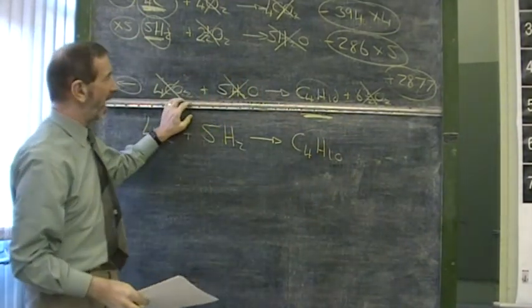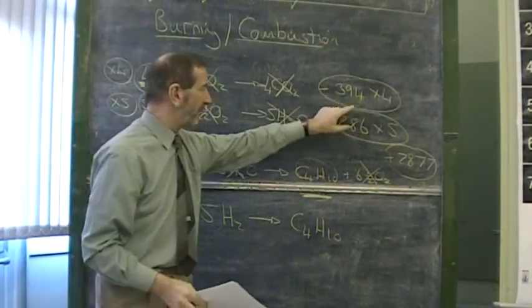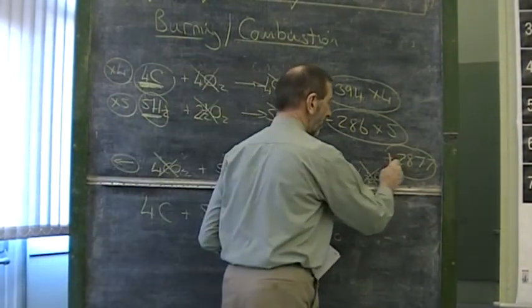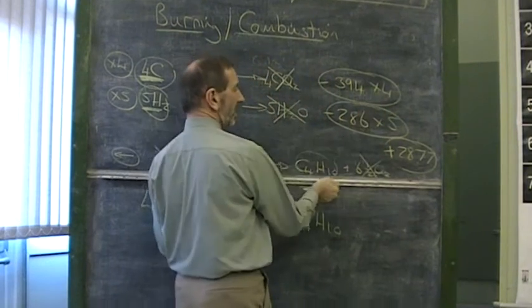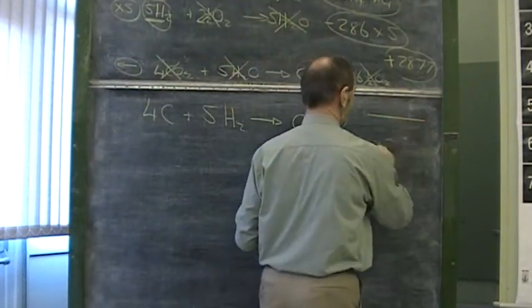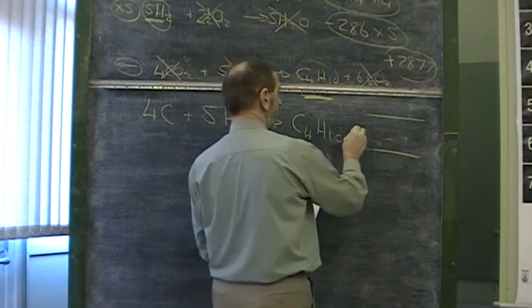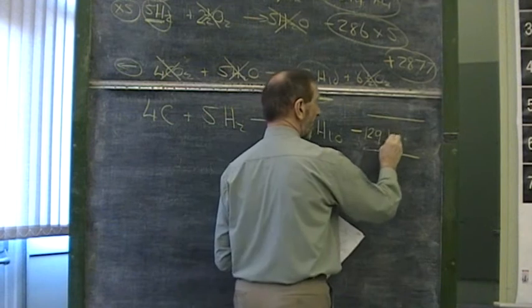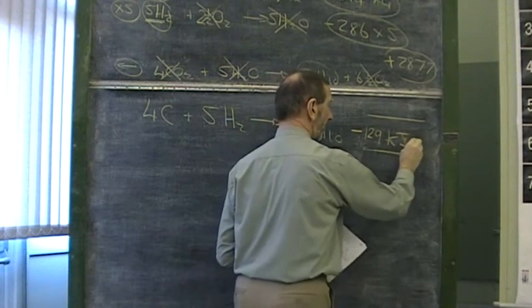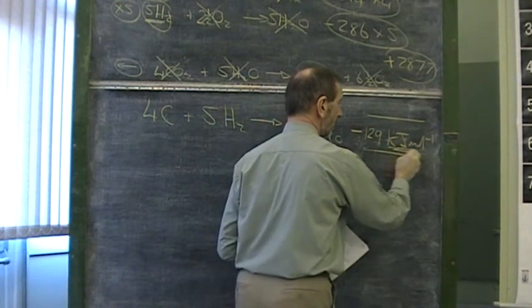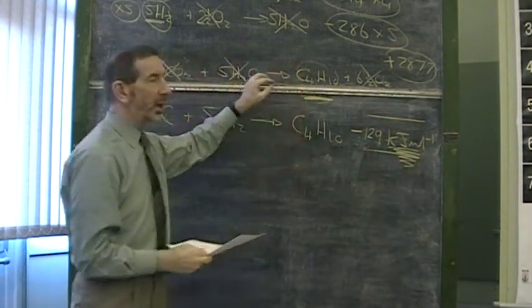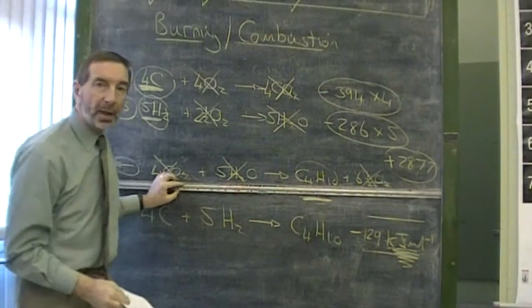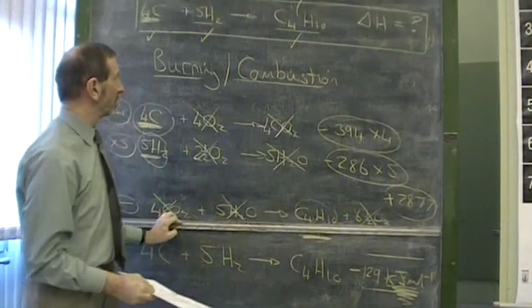But it's more important that I add up the numbers correctly. If I multiply this by 4, this by 5, and make sure this is a positive value, and add these numbers together carefully, it's silly to lose marks at this stage. I get the final answer which is negative 129. Then I must put the units in. Kilojoules per mole. You must end up with the units. You can leave the units out in the course of the calculation, but you must show the units at the end.